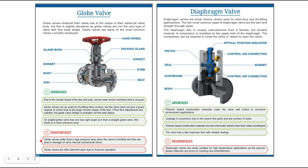Disadvantages of globe valves: they suffer from a high pressure drop when the valve is throttled, which can lead to damage of the valve's internal components. Globe valves are often jammed open due to incorrect operation.